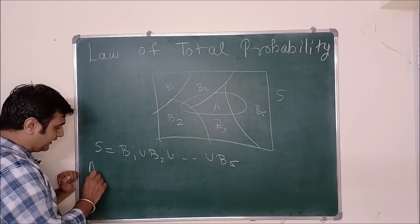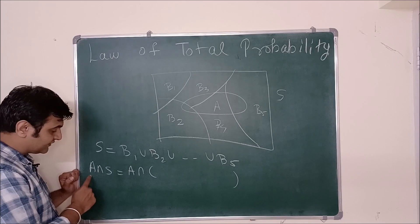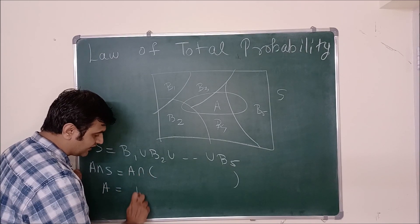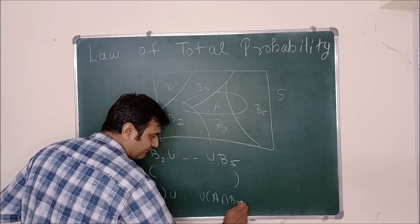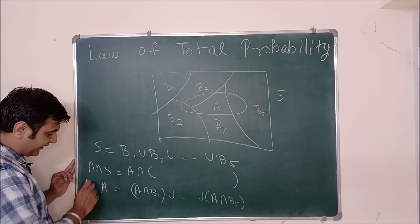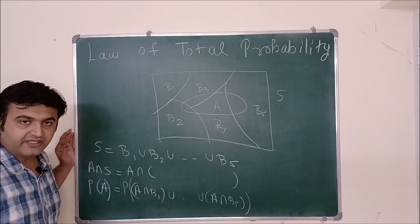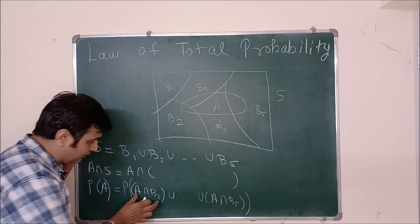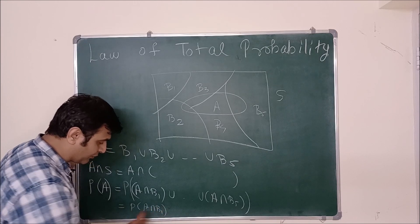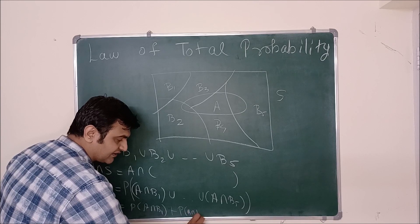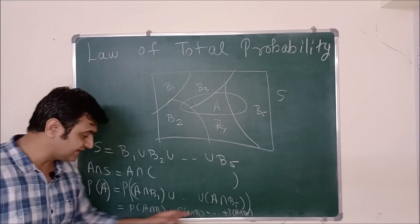If I take intersection on both sides, A intersection with S is just A, since A is a subset of S. By the distributive property this expands to A∩B1 union A∩B2 union ... union A∩B5. Taking probability on both sides, and recalling that for disjoint sets the probability of a union is the sum of probabilities, we get: P(A) = P(A∩B1) + P(A∩B2) + ... + P(A∩B5).